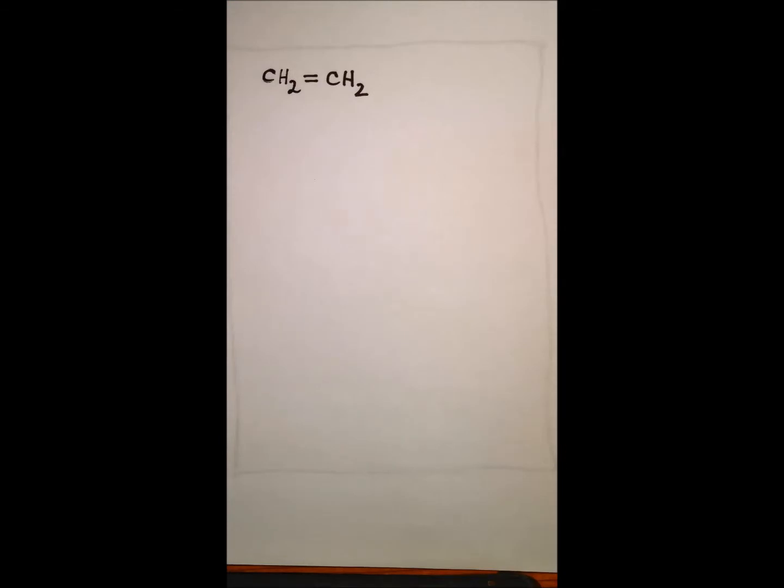The name of this is ethene, not ethane but ethene. Ethane would be CH3 single bond CH3, but this has a double bond so we hear that in its name, ethene. Now what does this look like?